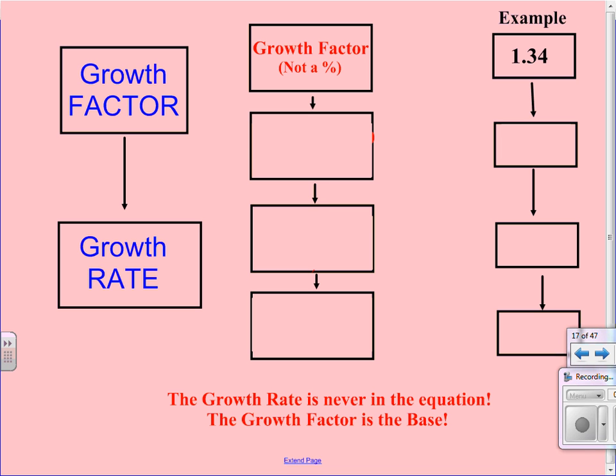The way we convert a decimal to a percent is to multiply by 100. When I take 1 and 34 hundredths, multiply it by 100, I get 134%. Again, that represents taking the whole, 100%, plus the percent increase of 34%.